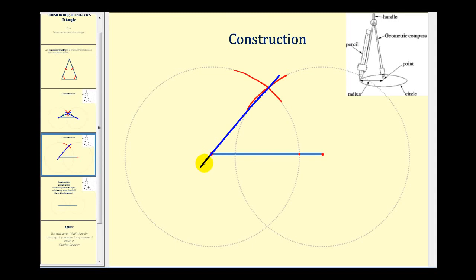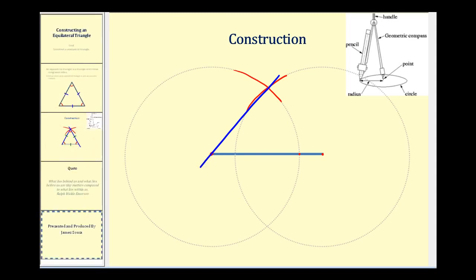We draw segments from the intersection of the two arcs to both endpoints of the segment to form our isosceles triangle. There's one side and there's the other. These two sides are congruent, and therefore we have an isosceles triangle.